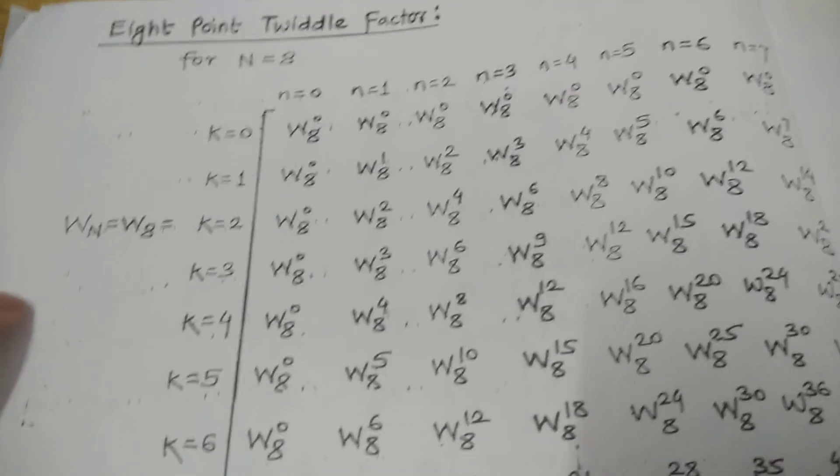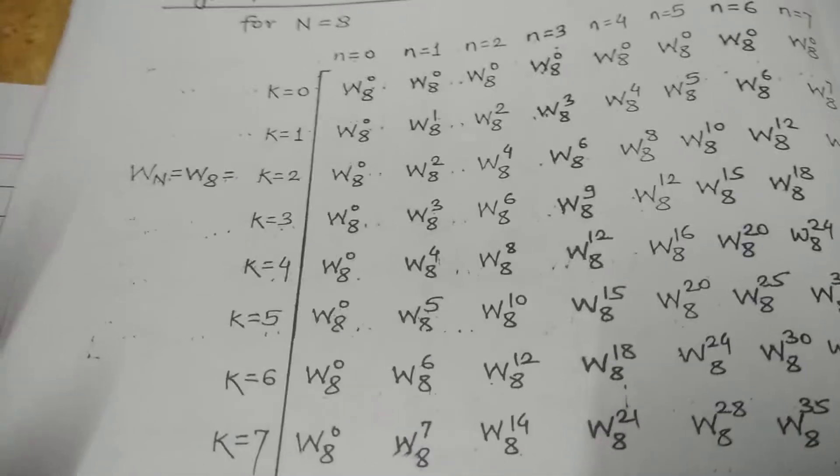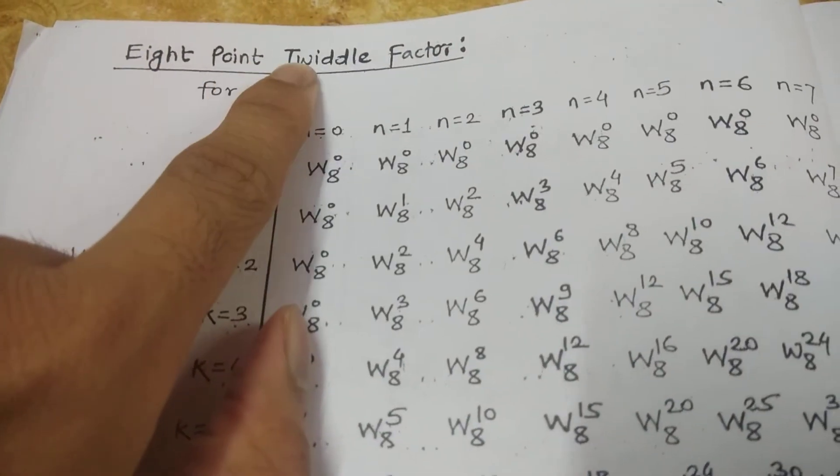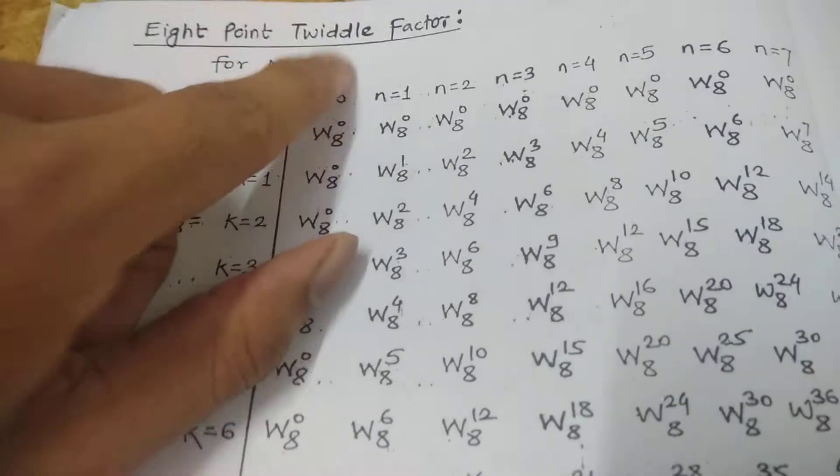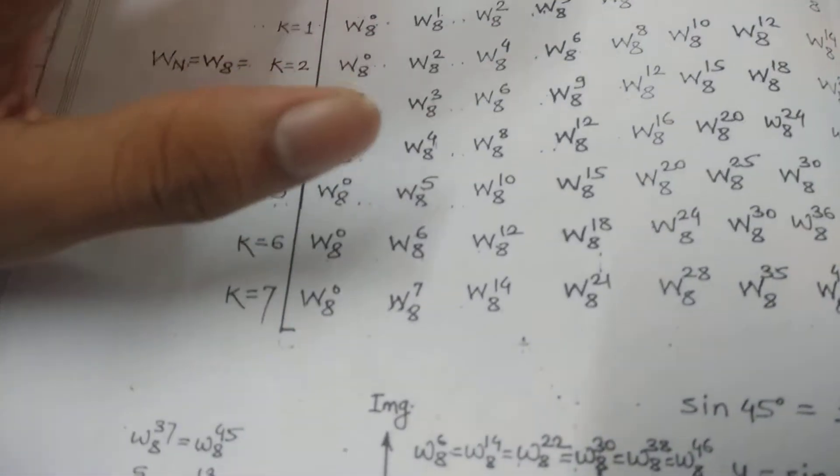After having the calculation for twiddle factor 4 and 6, now it's time for twiddle factor 8. For twiddle factor 8, your n will be 8. In this case, we will just prepare this particular matrix.